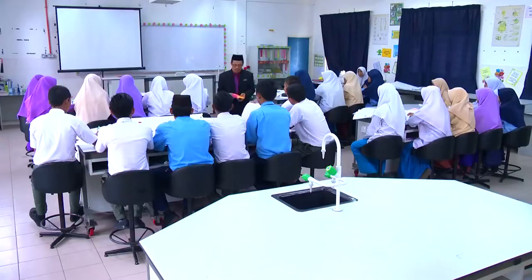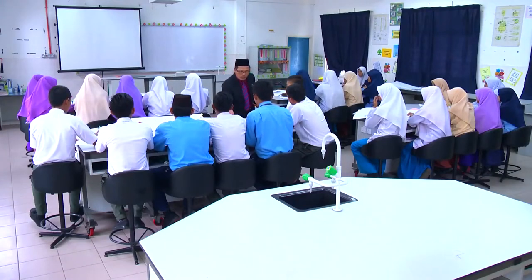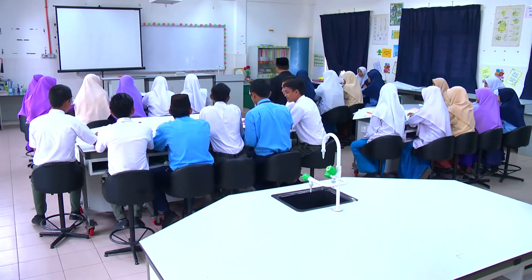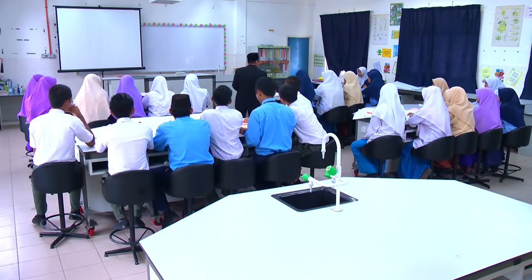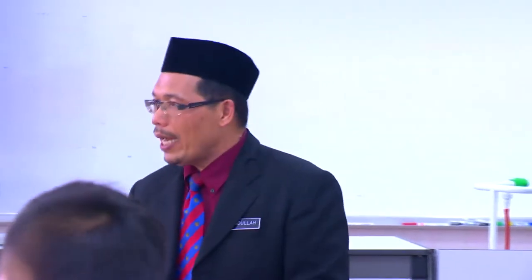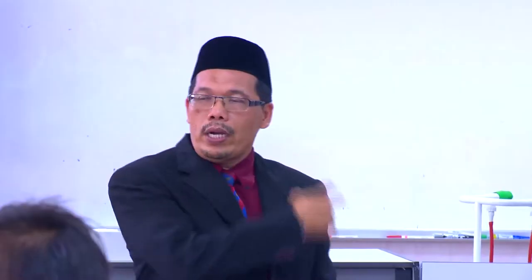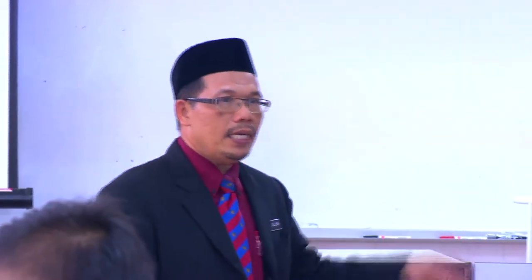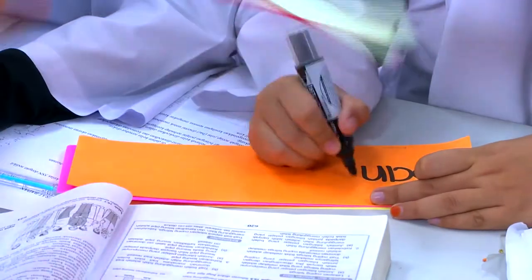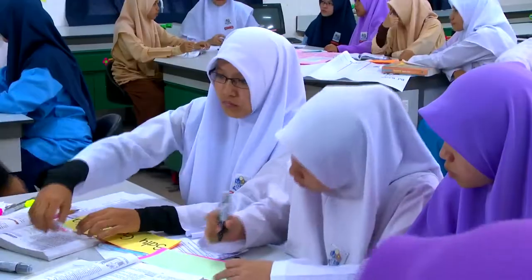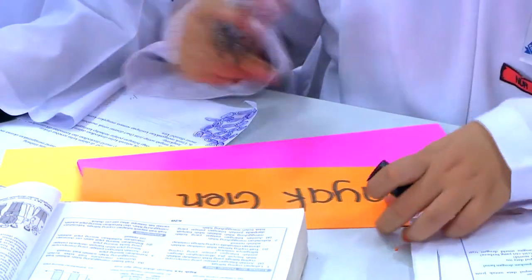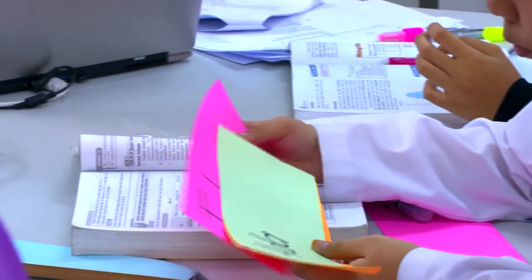Setelah siap menulis maklumat ini, tampalkan di papan putih, seperti mana jadual perbandingan antara variasi yang cikgu akan lekatkan. Ini untuk Kumpulan Hijau, ini Kumpulan Biru, di sini merah, dan di sini untuk Kumpulan Kuning. Berbincanglah sama kumpulan, kemudian wakil kumpulan tampalkan hasil di papan putih sana. Selamat menikmati.